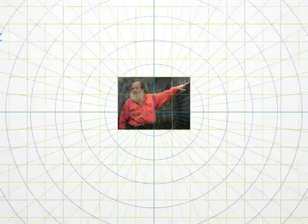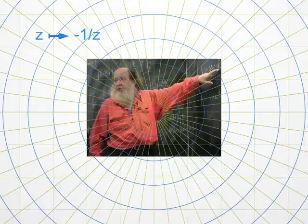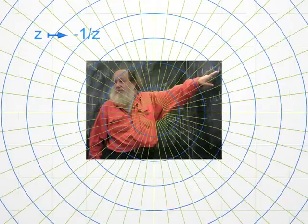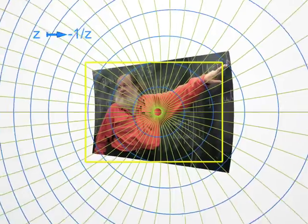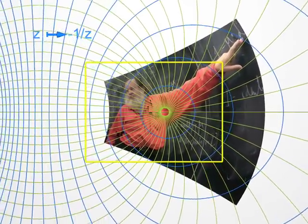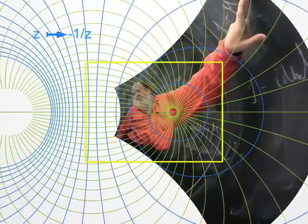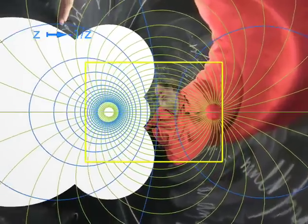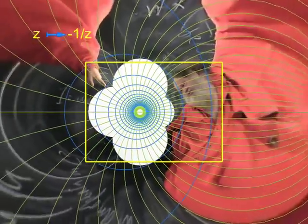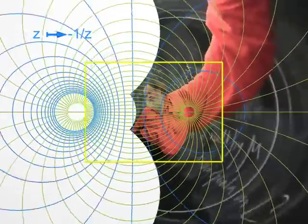Now let's go to a new transformation, sending the point Z to minus 1 over Z. Don't forget, with complex numbers, one can add, multiply, but also divide. Not by zero, of course. Doesn't this image remind you of the Sistine Chapel? Large complex numbers, with a large modulus, become small when one takes their inverses. And conversely.